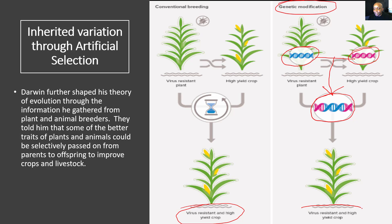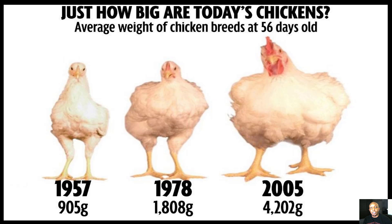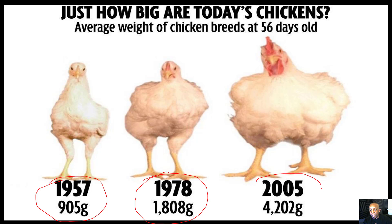The result is a combination of both plants' DNA, producing virus-resistant and high-yield crops. Now let's take a look at genetic modification with animals — specifically, how big are today's chickens? Looking at the average weight of chicken breeds at 56 days old: in 1957 the average chicken was 905 grams; in 1978 that number doubled to 1,808 grams; and in 2005, that number is almost five times greater at 4,202 grams. The size of these chickens grew larger through genetic modification in a much shorter period of time.